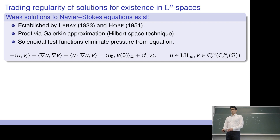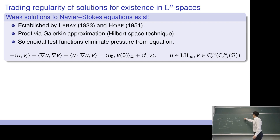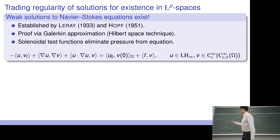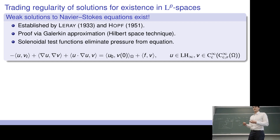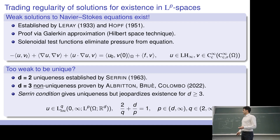They defined a suitable notion of solution by testing the equation with a special class of test functions that allows one to ignore the pressure, since our vector fields are divergence-free. We get at least some sort of solution that can be made sense of in physical terms, but it's only a weak solution. First there is only existence; the second question is whether the solution is unique.